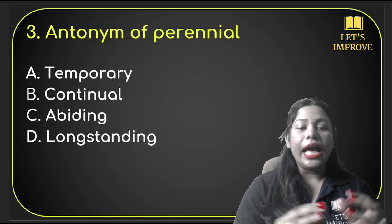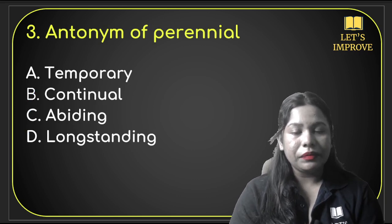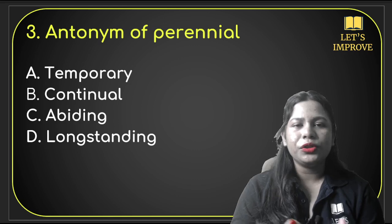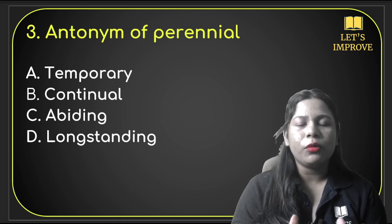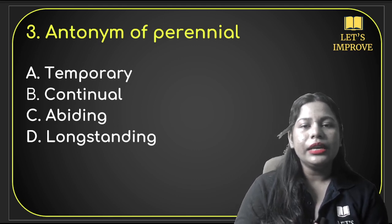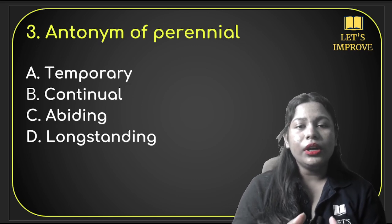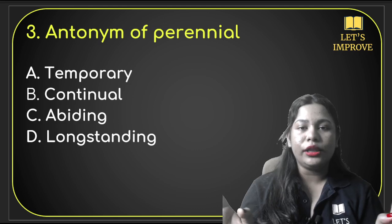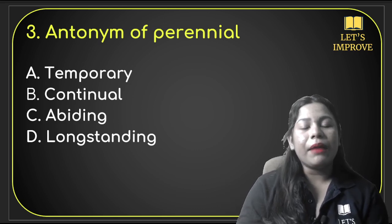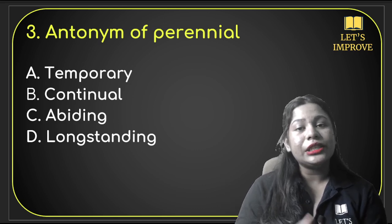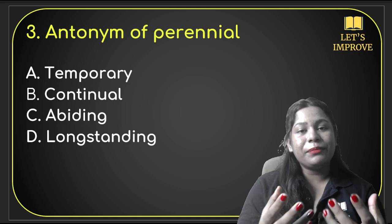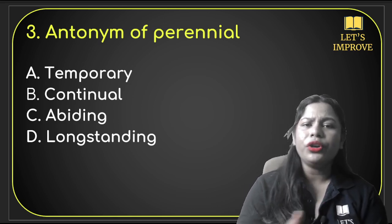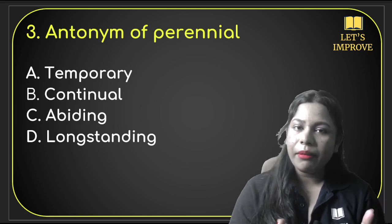Question number 3: antonym of 'perennial.' You have to look at geography — if you look at the amount of water in a perennial river, it has water throughout the year. Remember, this concept is perennial. There is a consistent amount of water.